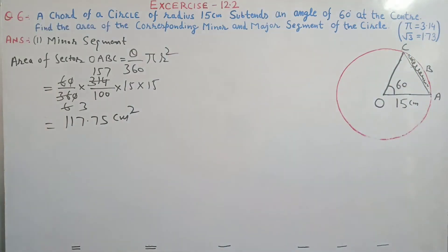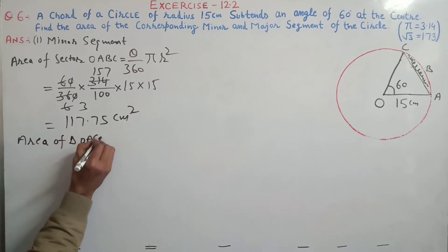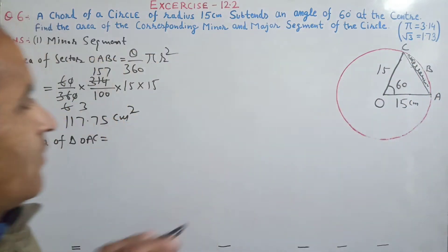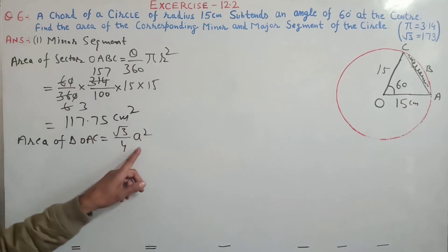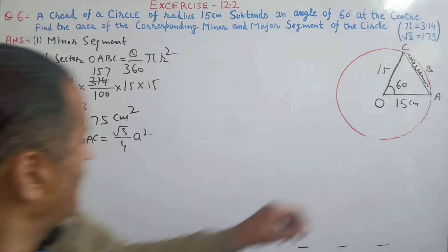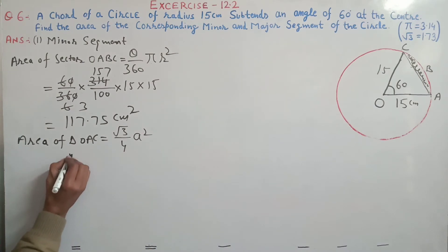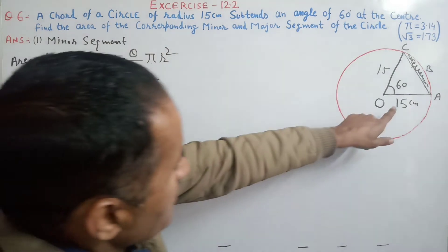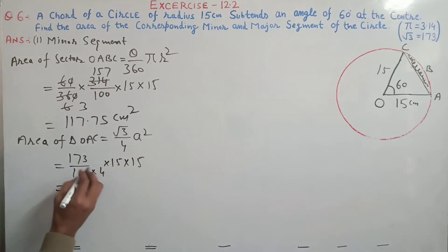Triangle OAC is an equilateral triangle. This side is 15, this is also 15, and this is also 15 — so it is an equilateral triangle. The area formula is: under root 3 by 4 times A squared. The value of pi is 3.14 and the value of under root 3 is 1.73. Here we multiply by A, and A is the length of the side — 15 cm. So 15 multiplied by 15.